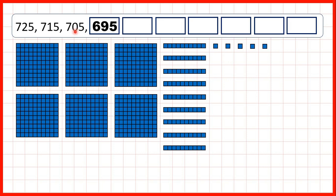So if we're subtracting 10, but our tens digit is a 0, that means our hundreds digit will need to change as well. But notice, because we're subtracting tens, our ones digit will always stay the same. So our ones digit will always be a 5. But if we ignore our ones digit, notice we have 72, 71, 70, 69. So counting back in tens from a 3-digit number is just like counting back in ones, but with our ones digit always staying the same.